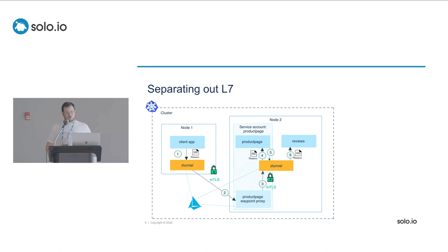So if we add waypoint proxies into the picture, the Z tunnels are only concerned with layer four concerns. So if you actually have policy, if you need to know what an HTTP request is, what a header is, what a path is, et cetera, then you need to go into the L7 world. And then that means you need waypoint proxies. The idea is that the Z tunnels can forward traffic to waypoint proxies for implementing that.